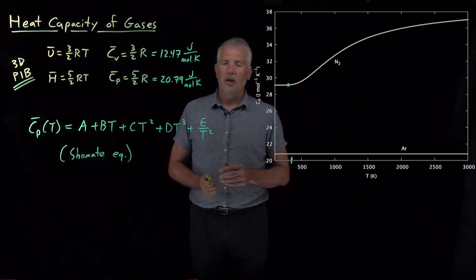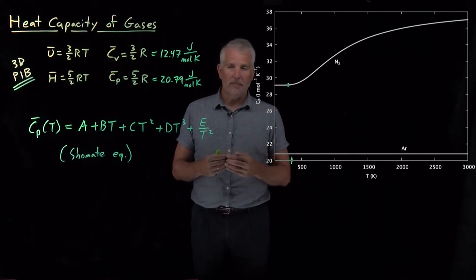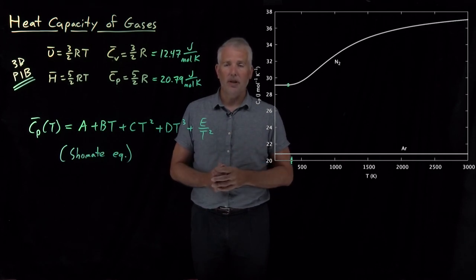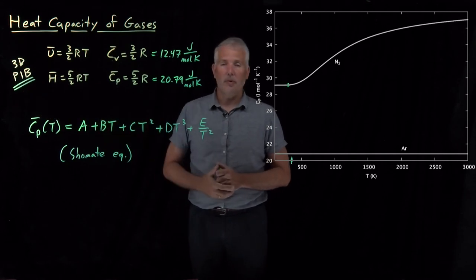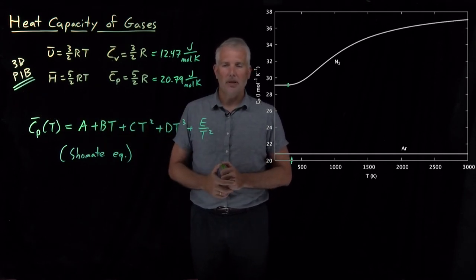And so one approach, and the one that we'll take next, is to take a step backwards, look at the quantum mechanics again, and say, okay, what have we left out of our model for a diatomic molecule that we didn't include in the 3D particle-in-a-box model that might help us make a better prediction about properties like the heat capacity. So that's what we'll tackle next.